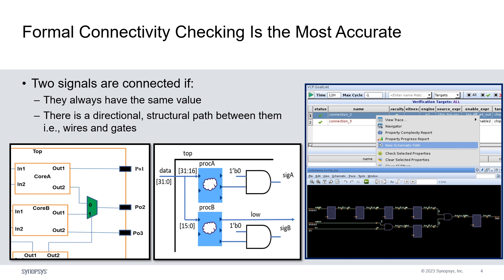In VC Formal CC app, two signals are connected if they always have the same value and there is a directional structural path between them, such as wires or gates. In the image below, core A.O.2 and P.O.2 can be connected depending on the enabling condition. However, SIG A and SIG B are not connected, despite the fact that they may have the same value, but there is not a physical path between them. Because VC Formal CC verifies both the signal values and their structural connections, it is more accurate than simply checking the structural connection or checking signal values in simulation.